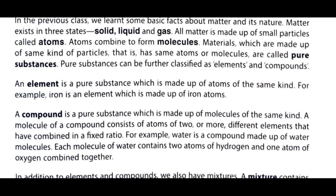Second is compound. What is compound? A compound is a pure substance which is made up of molecules of same kind. Compound aisa pure substance hai joh ki ek hi tereh ke molecules ka bana hootay hai. A molecule of a compound consists of atoms of two or more different elements that have combined in a fixed ratio. Eek molecule mein atoms dho ya dho se zhaadha tereh ke elements ke atoms hootay hain joh ki ek fixed ratio mein hootay hain.